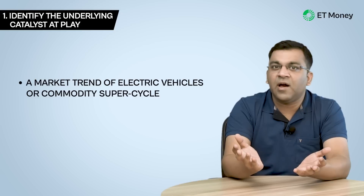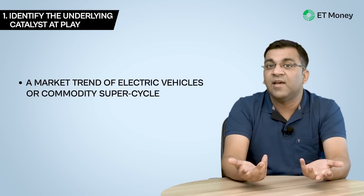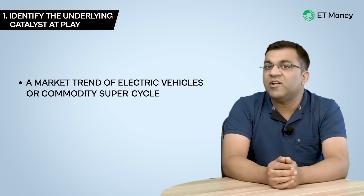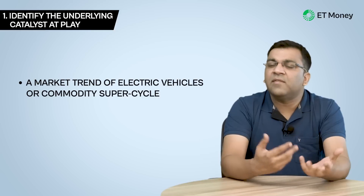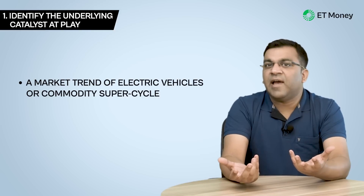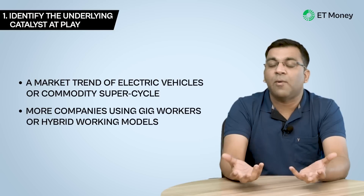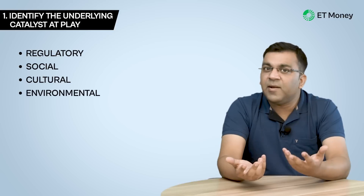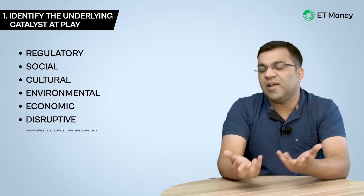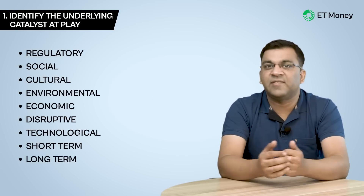For example, is there a trend showing up — like what we are now seeing with electric vehicles or the commodity super cycle? Or are there societal changes like more companies using gig workers or hybrid working models? These trends and shifts can be regulatory, social, cultural, environmental, economic, or disruptive technological — short term or long term. At this stage you are only looking at the big moving parts.